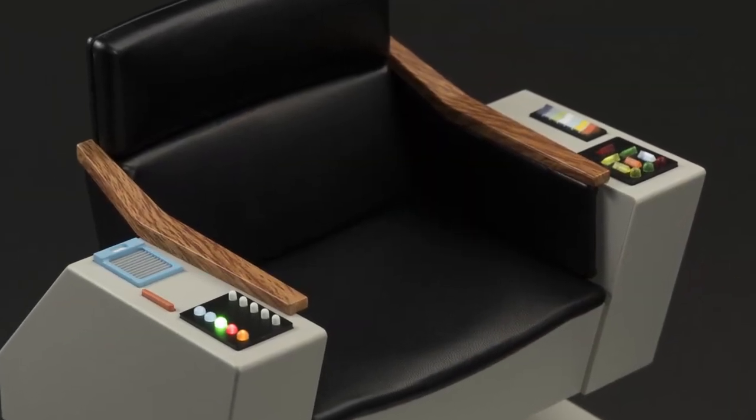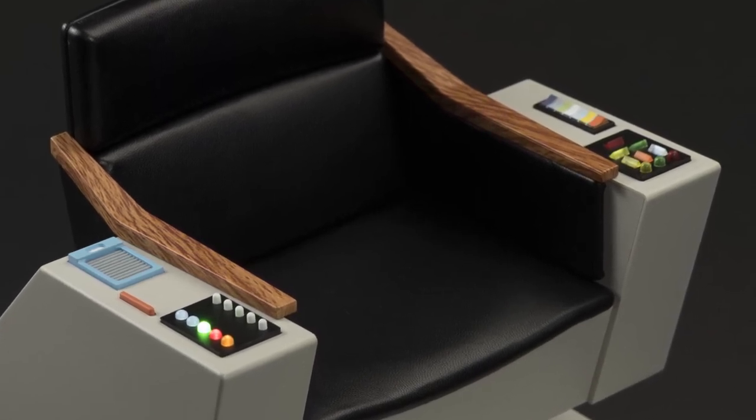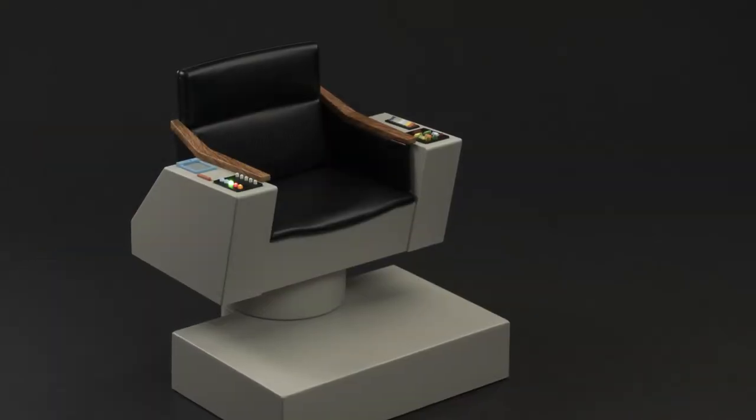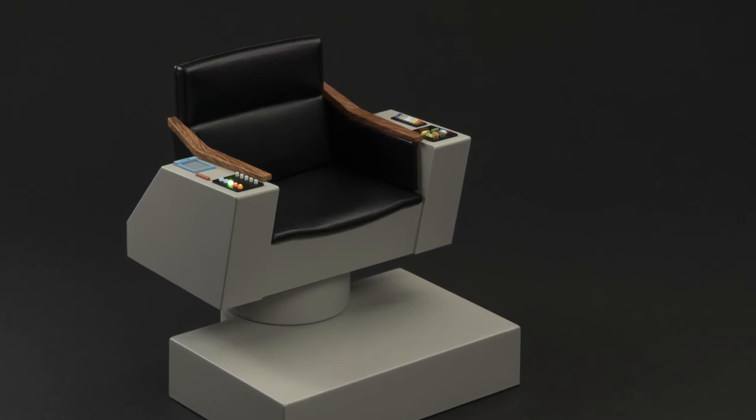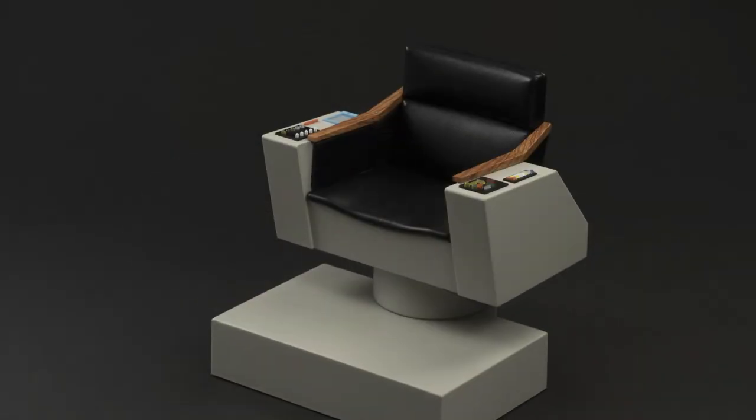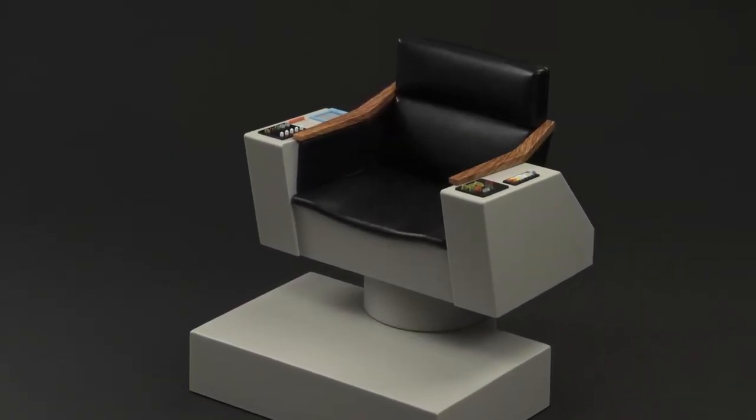Then I started thinking about what the captain's chair means. It's more than just a place for Kirk to sit. It's a symbol, not just of the power of the Enterprise, but of the responsibility that comes with it. The actions that the captain performs will be a direct reflection of that captain's character. The same can be said for anybody who is a stand-in for that role.